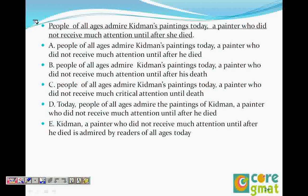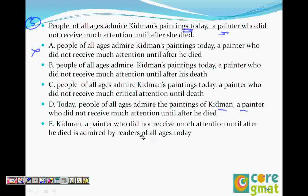This is the fifth one. People of all ages admire Kidman's paintings today, a painter who did not receive much attention until after she died. Again the same thing — 'paintings today' and 'a painter.' Today is not a painter. Who is the painter? It is Kidman. So 'a painter' should come after Kidman. So locate the choice where Kidman and 'a painter' are located together. This choice goes — you don't have to read the whole sentence; just locate the comma and see what is before and after: Kidman, a painter. So that means the other choices are gone.